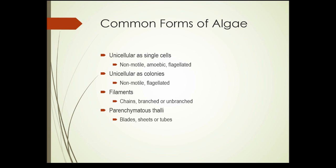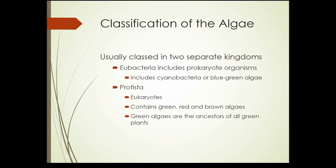Algae can also take the form of parenchymatous thalli, which are multicellular and can take the form of blades, sheets, or tubes, giving a much more plant-like appearance. Algae are classed in two kingdoms: eubacteria includes prokaryotic organisms without a true nucleus — that's the cyanobacteria or blue-green algae — while Protista are eukaryotes with true nuclei containing their DNA. Protista contain the red, green, and brown algae, which are common seaweeds and freshwater algae. Green algae are the ancestors of all green plants.